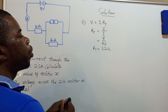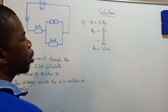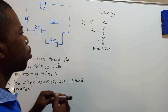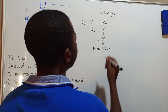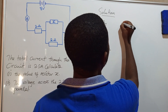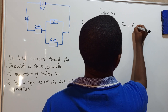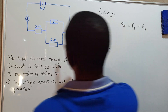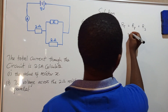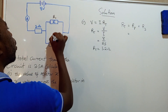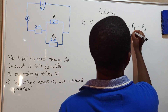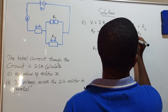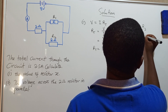So 3.2 ohms is our total resistance. Now after knowing the total resistance, we will use it to find resistor X. Total resistance equals the resistance of the parallel combination plus the resistance in series. For the parallel part, we call this resistor 1 and this resistor 2. So the parallel resistance is R1 times R2 over R1 plus R2.